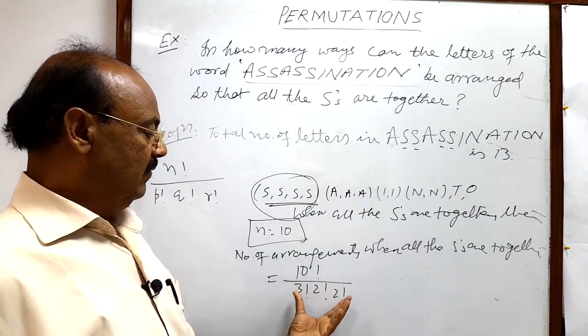So by using this formula, total number of arrangements will be this much. Now we will calculate it, we will simplify it.